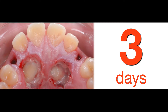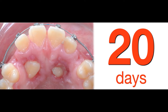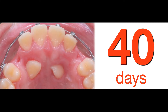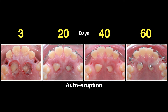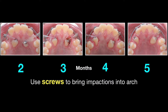Three days later you remove the pack. At 20 days and 40 days, what happens if it erupts and changes direction? At 15 days you'll be able to find the button and use the mini-screw to bring that up. So we are talking about a 60-day auto-eruption.